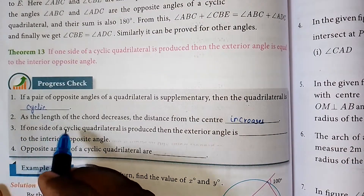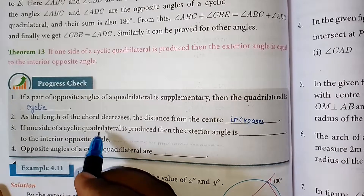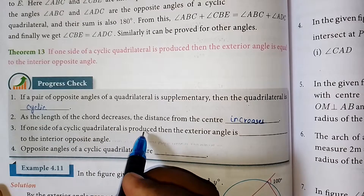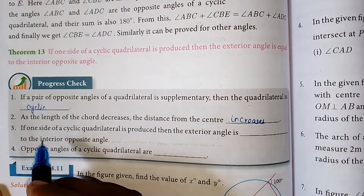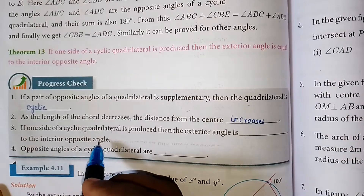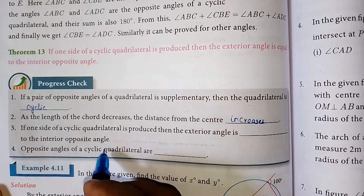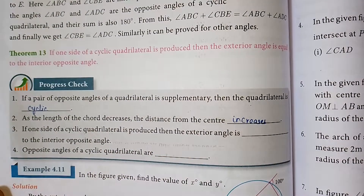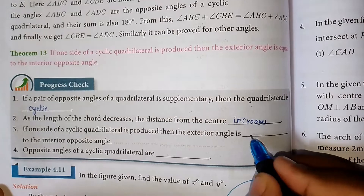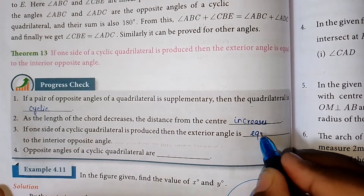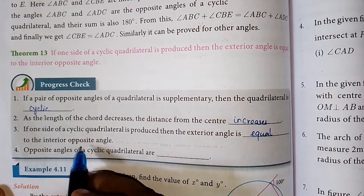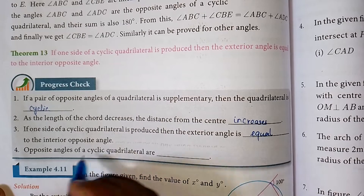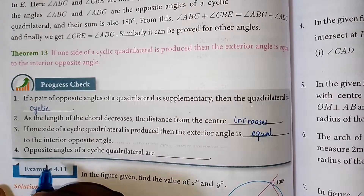Second one: if one side of a cyclic quadrilateral is produced, then the exterior angle is equal to the interior opposite angle.